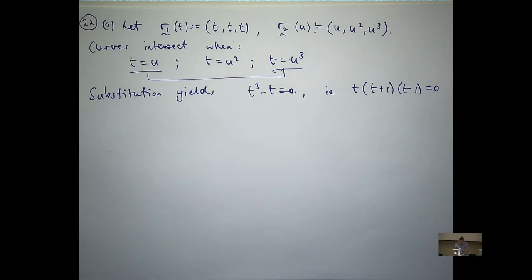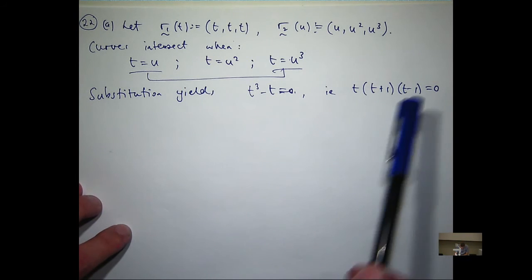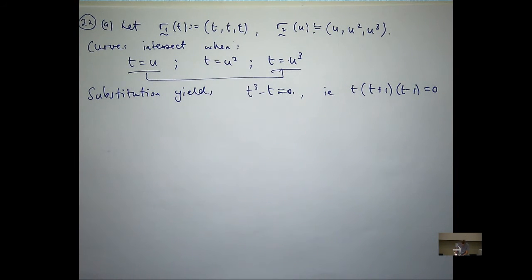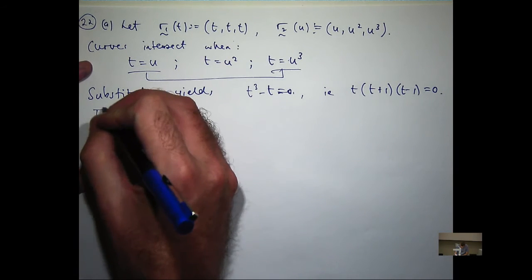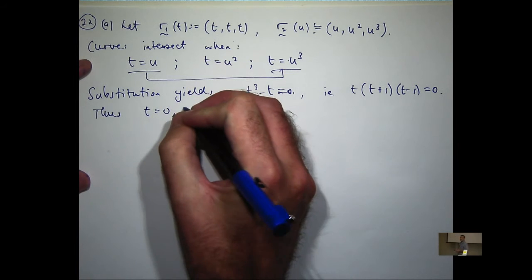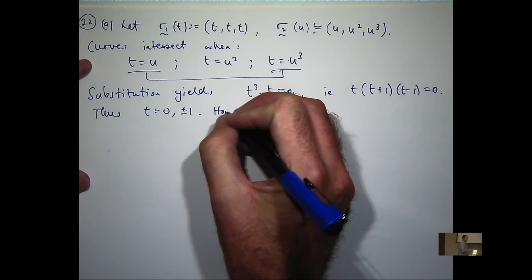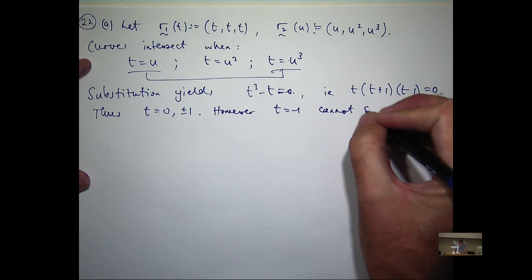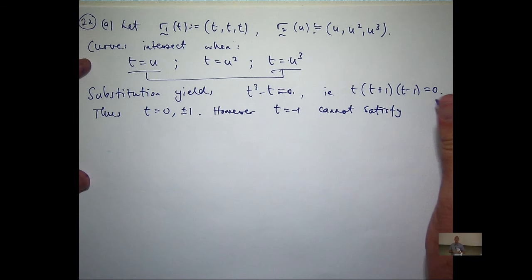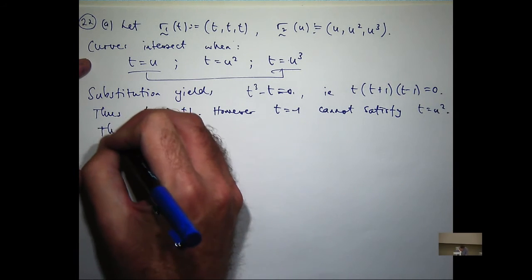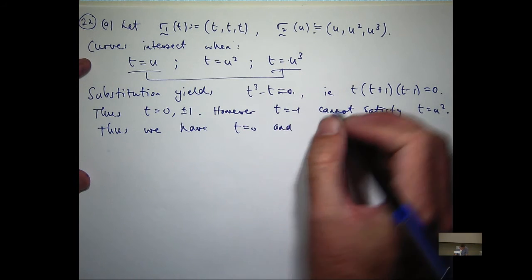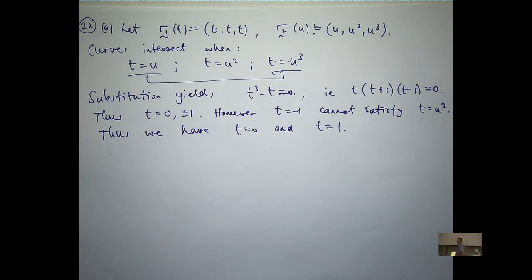But can anyone suggest why I should ignore t equals minus one here? It doesn't satisfy the equation t equals u squared, because t can't be negative — it's something squared. So our t values of interest are t equals zero and t equals one.